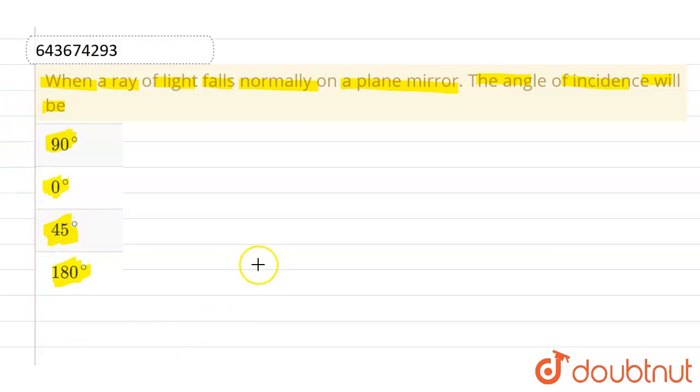So let this be the plane or the mirror on which the reflection process is proceeding. And let this be a line which is normal to the plane mirror. This is the normal to this particular mirror. This one is the normal, and this one is the incident ray.